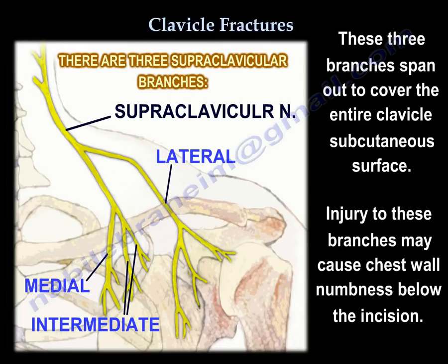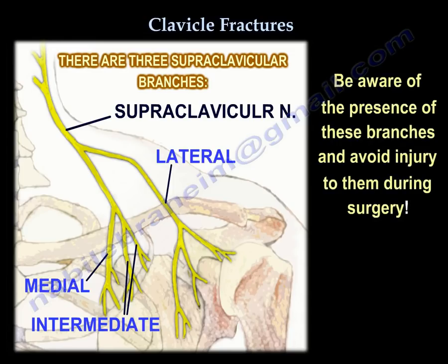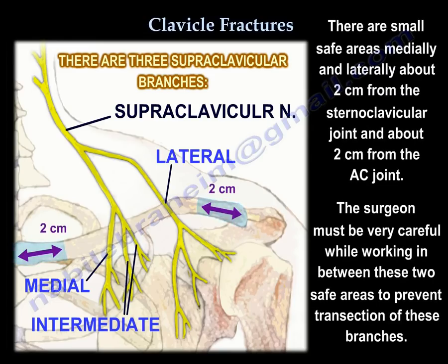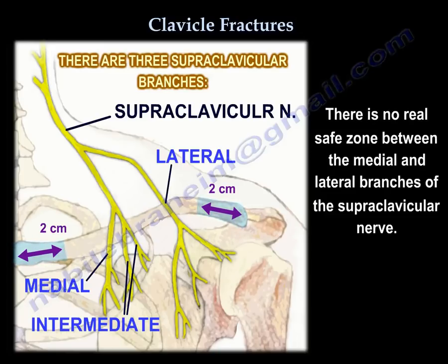Injury to the supraclavicular nerve branches causes chest wall numbness below the incision, which is very common after clavicle surgery and can result from the incision or from traction on the nerve. The location of each branch is variable. There is a small safe area medially and laterally — about two centimeters from the sternoclavicular joint and two centimeters from the AC joint — but between these zones the surgeon must be very careful. There is no predictable safe zone between the medial and lateral branches.